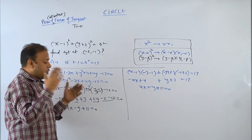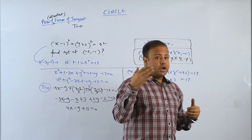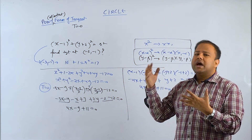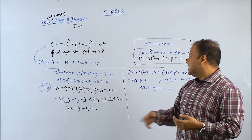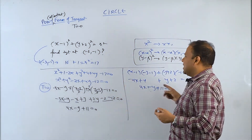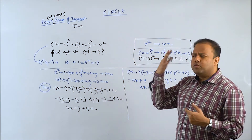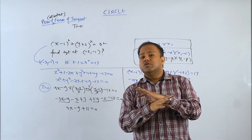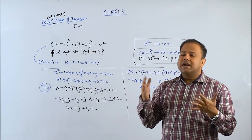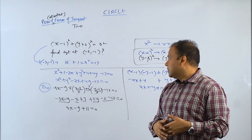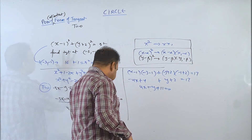So this is called point form of tangent. Whenever the point of contact is given, use T = 0 to find the tangent in one line — no need for slope form or p = r method. One more question I am going to show you.